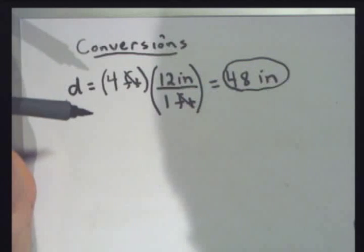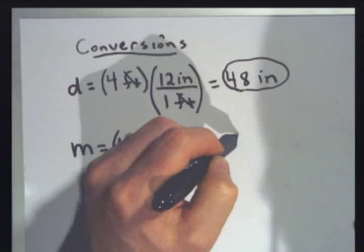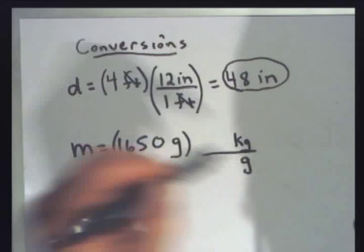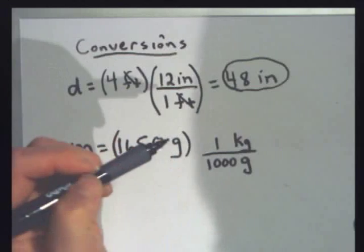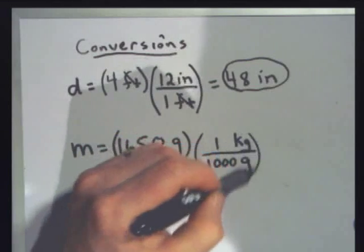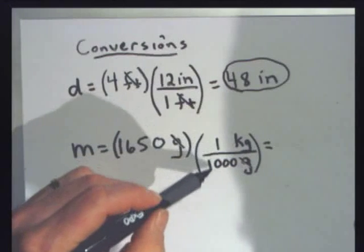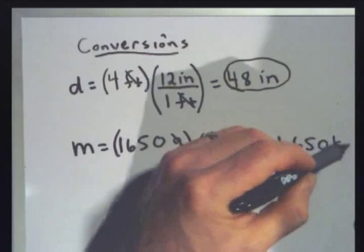You want to do conversions this way all the time. Let's do a mass. I've got a mass of 1,650 grams, and I want to convert that to kilograms. So kilograms has to be the answer — I'll put kilograms on top. Grams have to cancel out, so they go on the bottom. The conversion: 1,000 grams on the bottom is the same as 1 kilogram on the top — kilo means 1,000. The grams cancel out, and I've got 1,650 times 1 divided by 1,000, which gives me 1.650 kilograms.